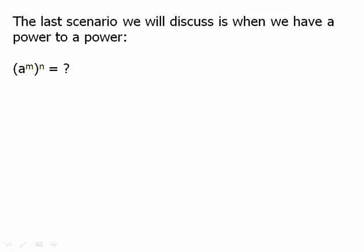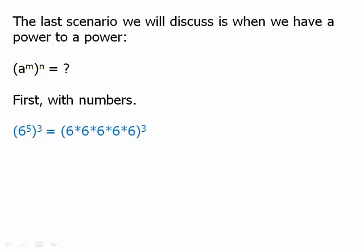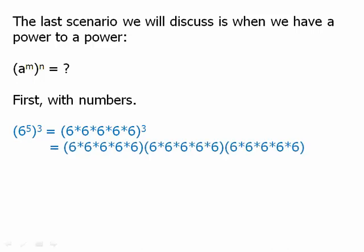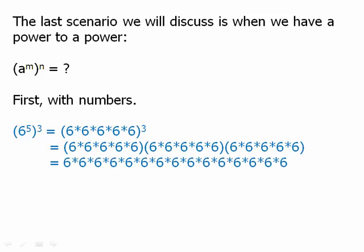The last scenario we will discuss is when we have a power to a power — a to the m, and that whole thing to the n. We're going to think this through in terms of the fundamental laws of exponents. Let's start with numbers: six to the fifth, and that whole thing cubed. Six to the fifth fundamentally means five factors of six multiplied together. So we have five factors of six in the parentheses and we're cubing that. Cubing means we multiply it by itself three times. So we take that parenthesis times itself three times. We have three parentheses and each one has five factors in it, so when we multiply it all together we have three times five, or 15 factors of six. So of course it would be six to the fifteenth.